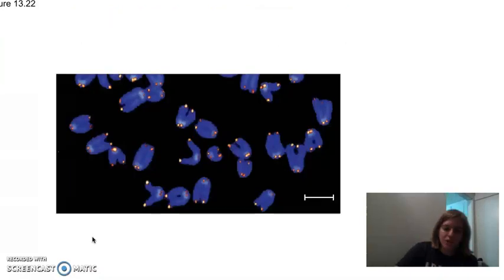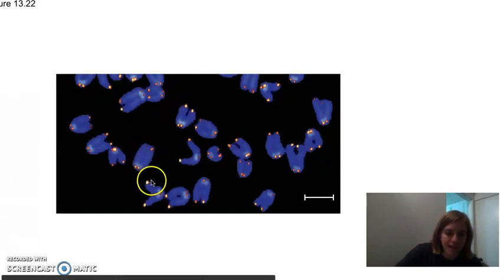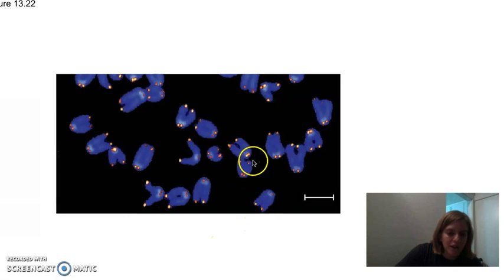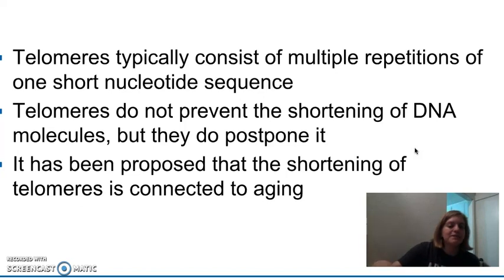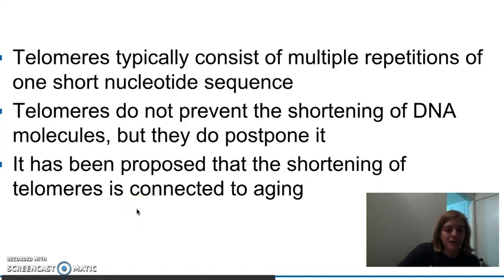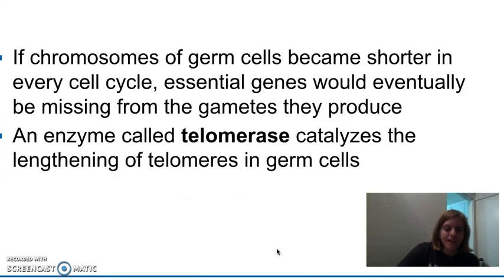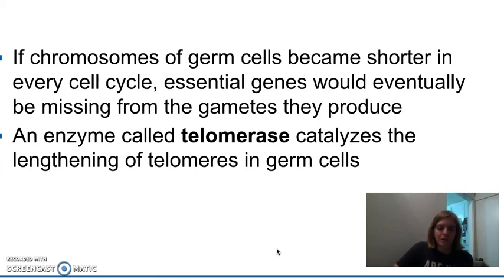Telomeres don't completely prevent erosion — they just postpone it. The telomeres are highlighted here in orange, right at the end of those chromosomes. They don't totally prevent the shortening of DNA molecules, but they postpone it for a certain amount of time. Once your cells have divided many, many times, your telomeres become shorter. We currently think that telomeres may play an important role in aging because as your cells divide many times, your telomeres become a lot shorter. Eventually the telomeres would disappear from repeated replication and some of our genes might start disappearing from those gametes.